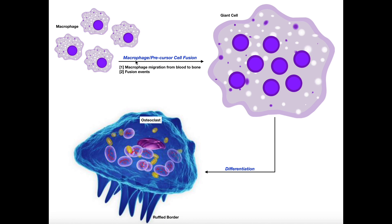Osteoclasts come from monocytes originally, via macrophages. To form an osteoclast, several macrophages — which are already large cells — must migrate from the blood to the bone tissue and then fuse together. The result is a very large cell aptly called a giant cell. The giant cell is a conglomerate of all the macrophages, so all their nuclei are contained within it. Under certain conditions, the giant cell is then stimulated to differentiate into an osteoclast.